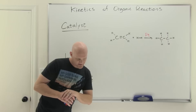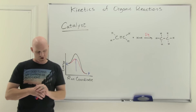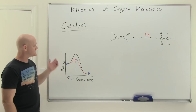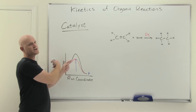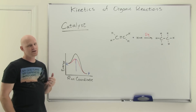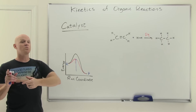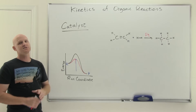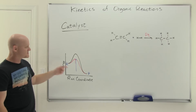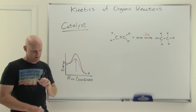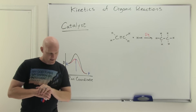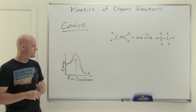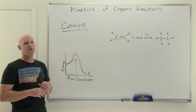To summarize: a catalyst speeds up a reaction in both directions, lowers the activation energy in both directions, which means it raises the rate constant in both directions. It does not get consumed and does not shift the equilibrium. It does this by providing an alternate pathway or mechanism for the reaction to occur.